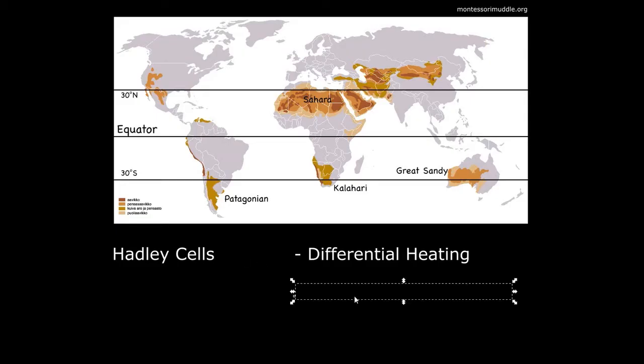Another important thing to keep in mind is that as air rises, it loses moisture. As it rises it cools, and the water vapor condenses and then falls as rain. That's an important piece of this puzzle.